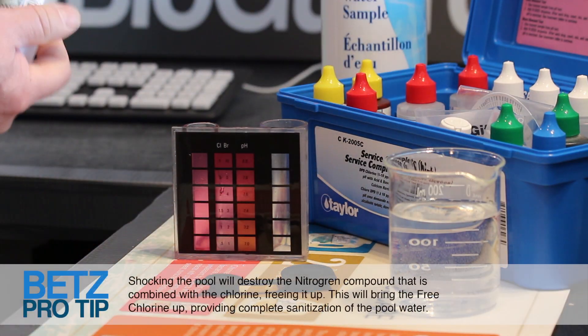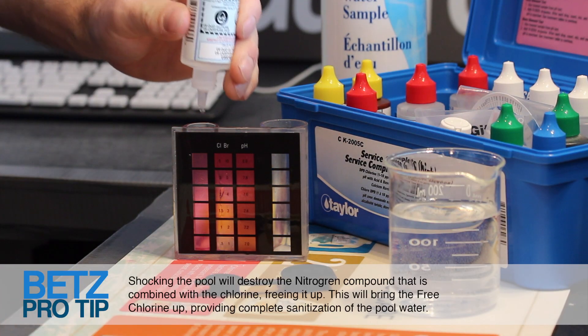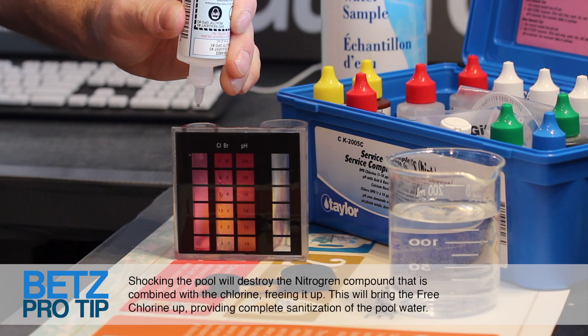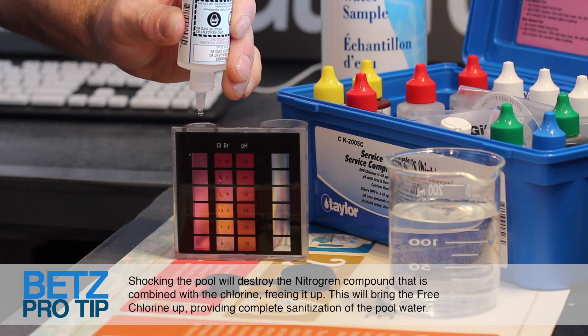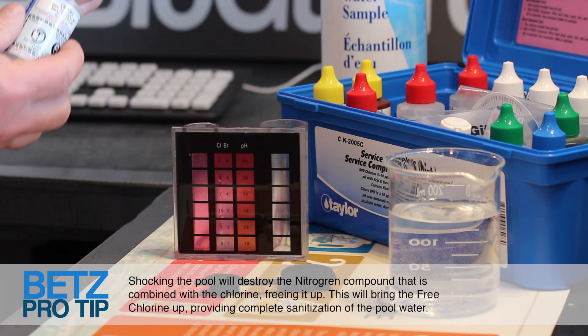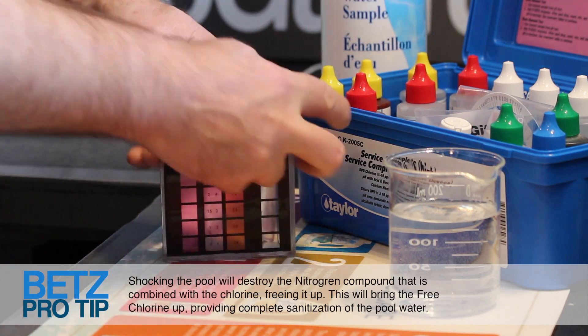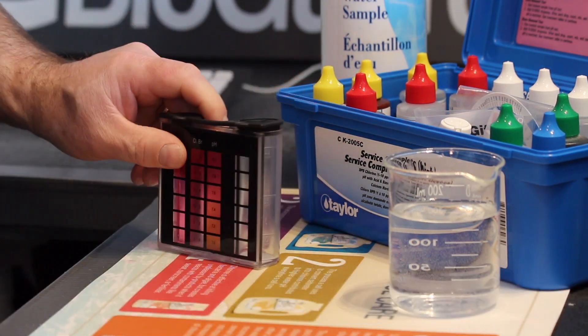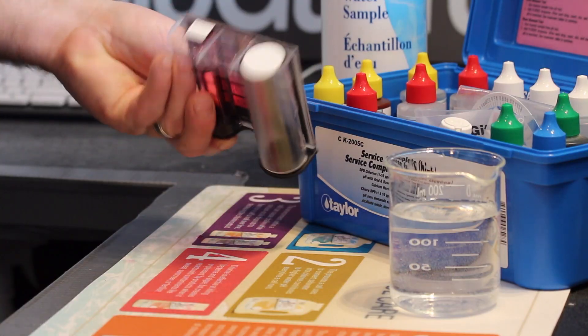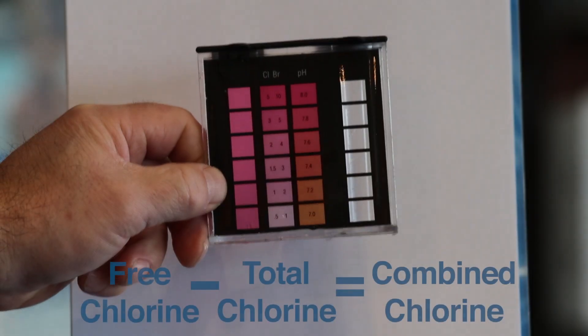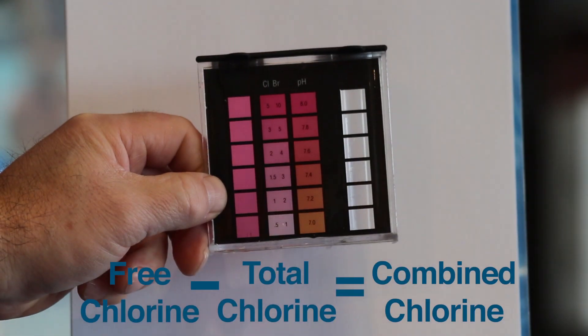Now add 5 drops of reagent number 3. Cap and invert to mix. Record this as total chlorine. Subtract the free chlorine from the total chlorine to find the combined chlorine.